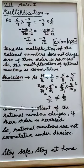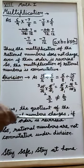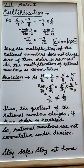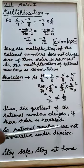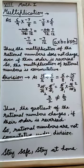Thus, the quotient of the rational numbers changes if their order is reversed. So, rational numbers are not commutative under division.